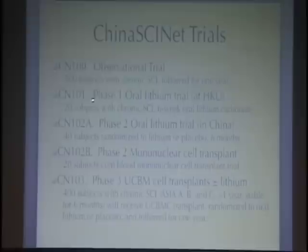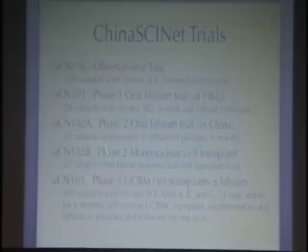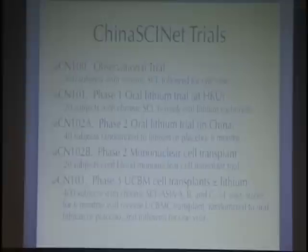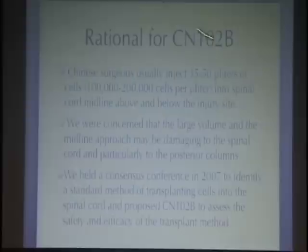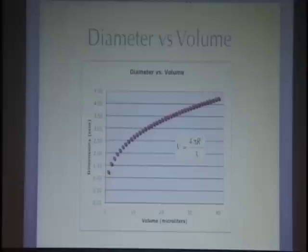We are running the following trials through the China Spinal Cord Injury Network: an observational trial, a phase one oral lithium trial, and a phase two oral lithium trial in China. We're currently running the phase two trial, which Weissman and Poon will describe. As soon as this is completed, we're planning a phase three trial with 400 subjects receiving umbilical cord blood cell transplants, randomized to lithium or placebo and followed for one year.